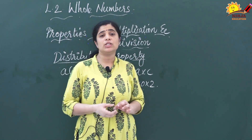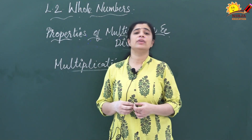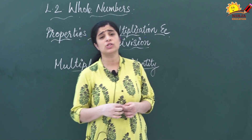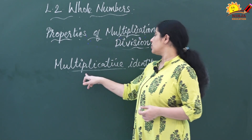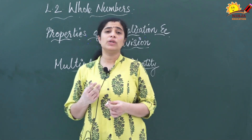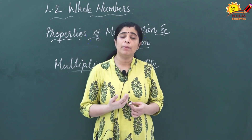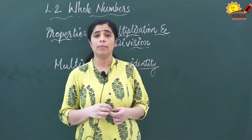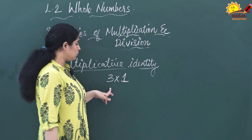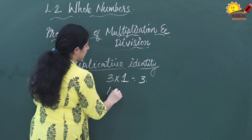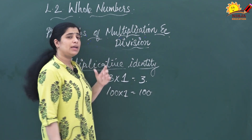Now we will see what is multiplicative identity. In addition, we discussed additive identity, and 0 is the additive identity. Here we are going to discuss about the multiplicative identity. When you multiply any number by 1, you are getting the same number only. For example, 3 × 1 = 3, and 100 × 1 = 100. So 1 is known as the multiplicative identity.